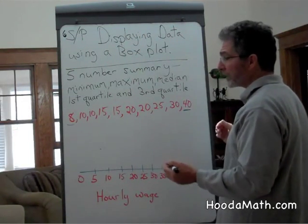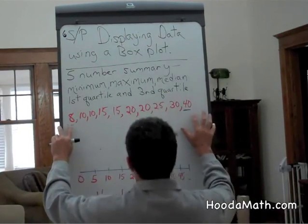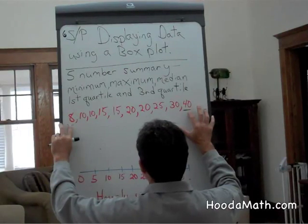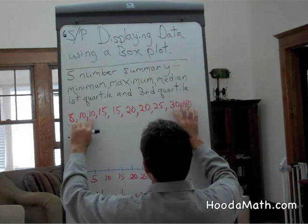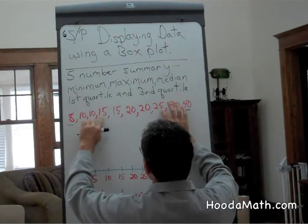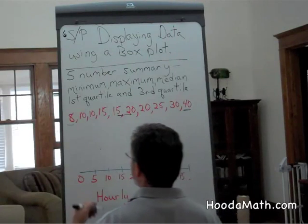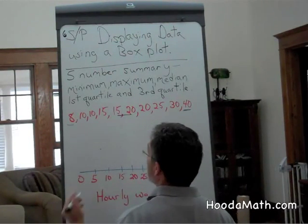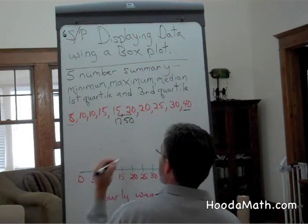The median is the middle number. So we cross out the biggest and smallest number, the next smallest, the next biggest, the next smallest, the next biggest, the next smallest, and the next biggest. We're left with two numbers in the middle. We find the average of 15 and 20, which is $17.50. That is our median.